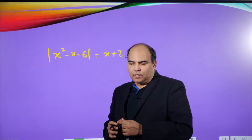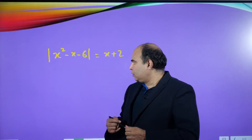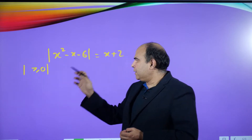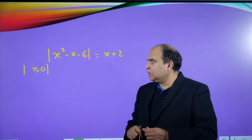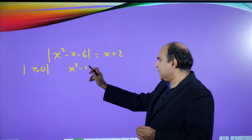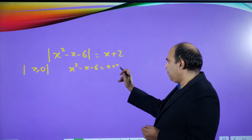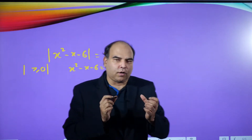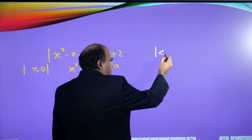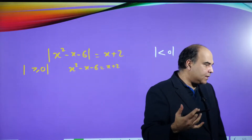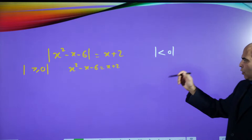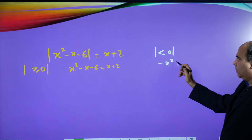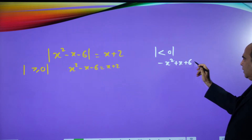Your first step is: if inside the modulus is greater than or equal to zero, your expression opens as x² - x - 6 = x + 2. In parallel, if inside the modulus you've got a negative value — meaning x² - x - 6 is negative — then the modulus opens with a minus multiplier on the entire expression, giving: -x² + x + 6 = x + 2.